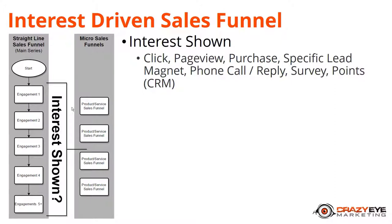If they're requesting a specific lead magnet — like opting in for a Facebook ads checklist — you can be sure they're interested in Facebook advertising. If they call you or reply to one of your emails, they're obviously interested. If you pass out a survey and they fill it out, they'll tell you what they're interested in. You can also gauge interest based on points if you're using a CRM solution — if somebody reaches a certain number of points, you can tell how interested they are.